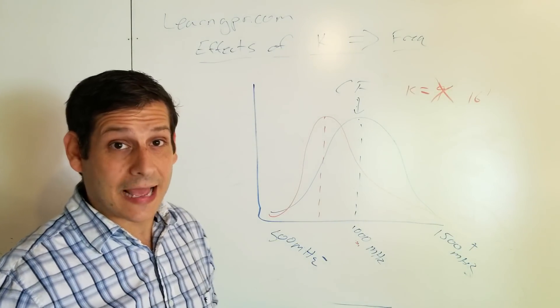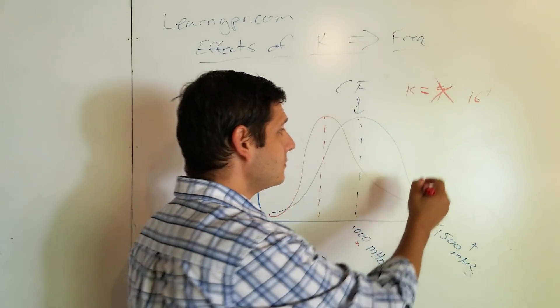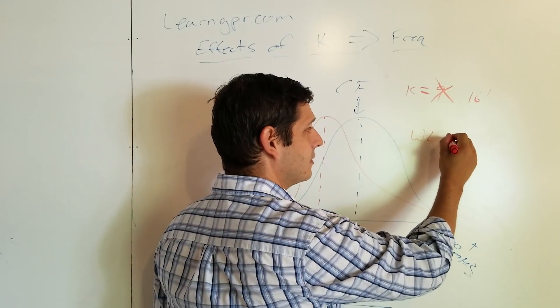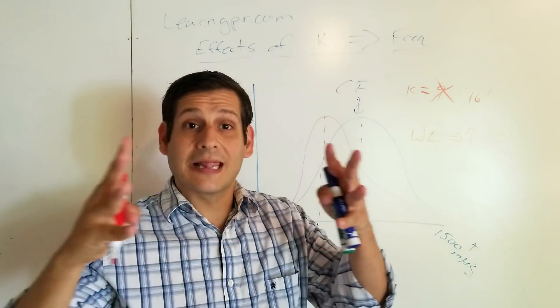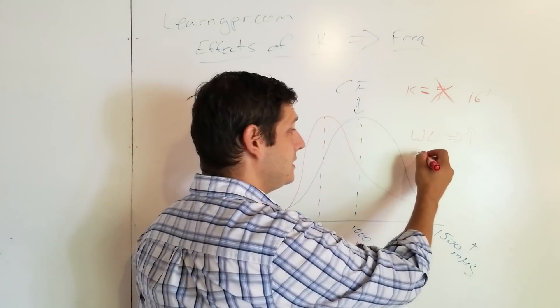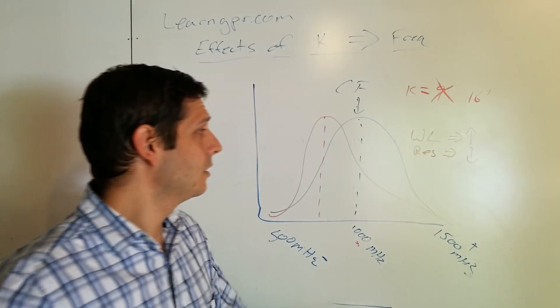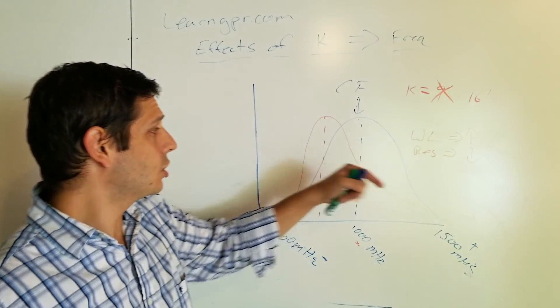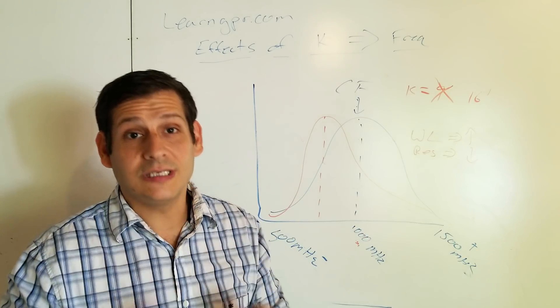So this downshift in permittivity now has some effects on your results or your responses. Namely, here's what happens. This downshift will cause an increase in wavelength. An increase in wavelength. That means your wavelength will be longer. And a decrease in resolution. A decrease in resolution. So your wavelength will increase, but your resolution will decrease.